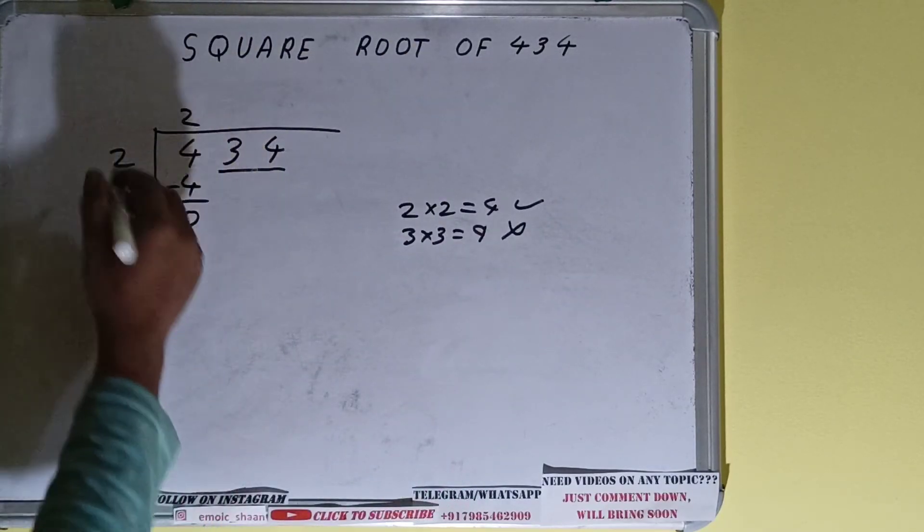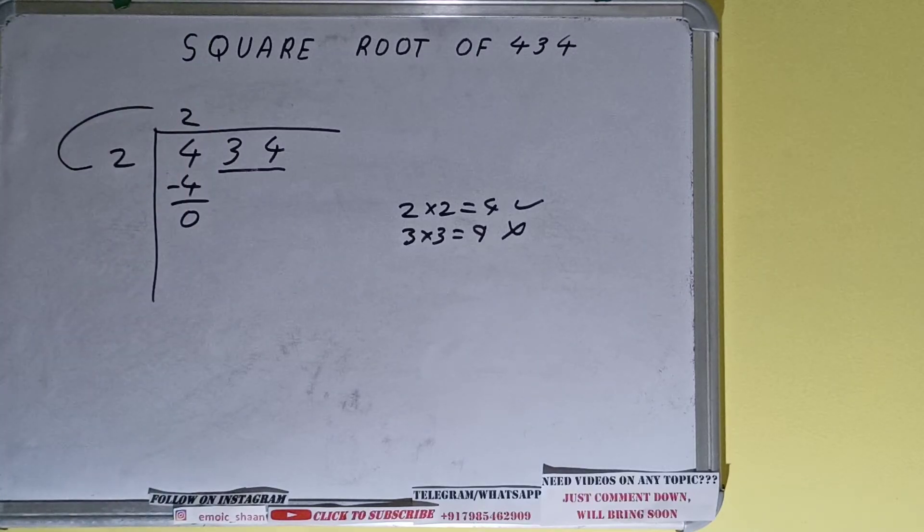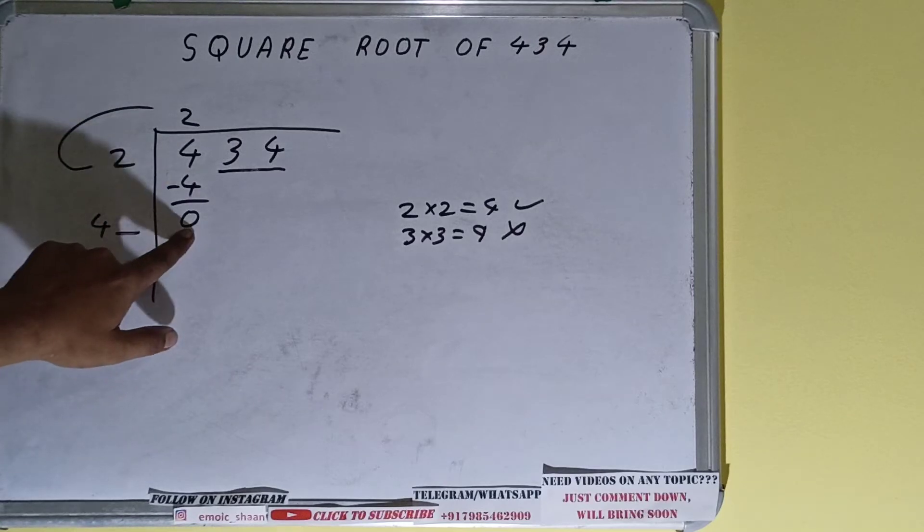Now we did 2 × 2, right? So do 2 + 2, it will be 4, and keep one digit extra. This number we need to make it big.